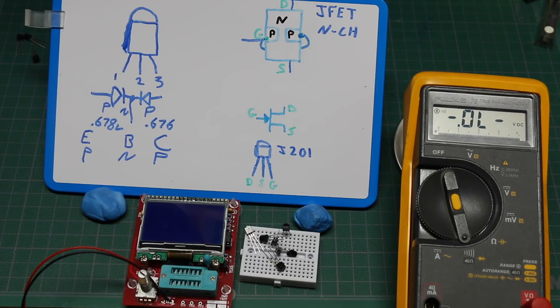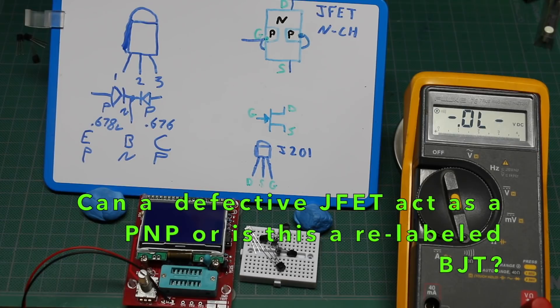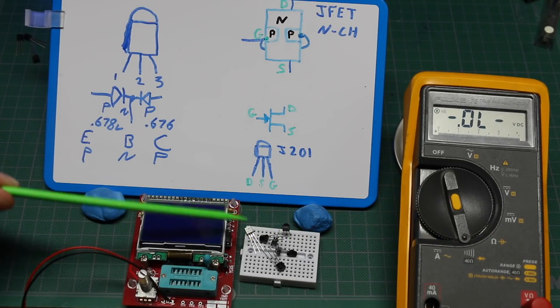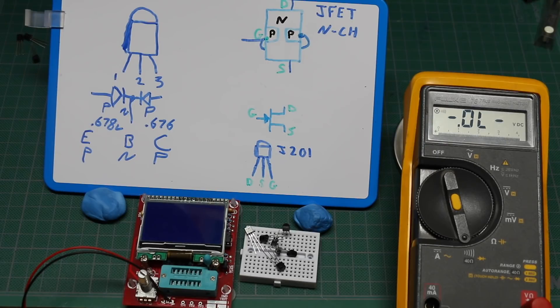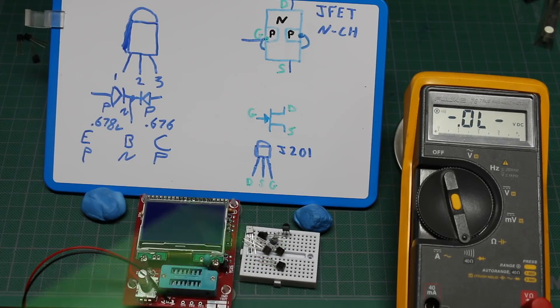When you buy cheap stuff on eBay, be aware it may not be what you expect. Even if it appears to work, it might have been set aside in production as a lower-grade version of the part. It may look like what it's supposed to be but has poor specs that you may or may not be able to test for. Buyer beware, and use common sense and the parts responsibly.